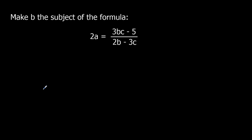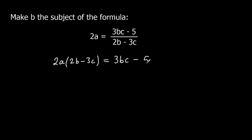One more question. If you want to pause the video and give it a go, otherwise just keep watching and I'll go through the answer. The first step: I'm going to get rid of the fraction. I've got something over (2b minus 3c), so I'm going to multiply both sides by (2b minus 3c). That gives 2a times (2b minus 3c) equals 3bc minus 5.